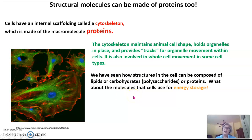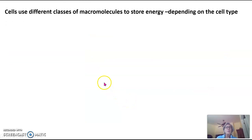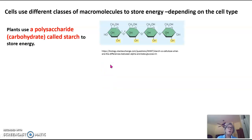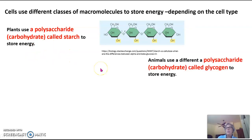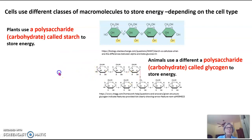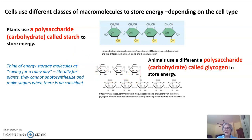Structures in the cell can be composed of lipids, polysaccharides, or proteins. But what about molecules that cells use for energy storage? Cells use different classes of macromolecules to store energy depending on the cell type. Plants use a polysaccharide carbohydrate called starch to store energy. Animals use a different polysaccharide called glycogen to store energy. You can think of energy storage molecules as being for a rainy day — literally for plants, they can't photosynthesize sugars when there's no sunshine, so on a rainy day they use their stored starch for energy.